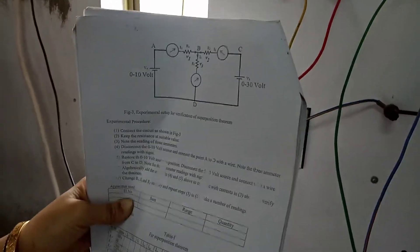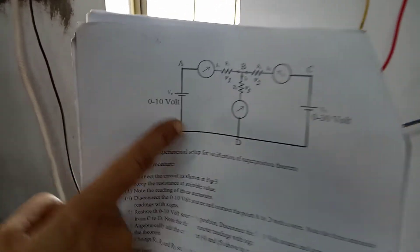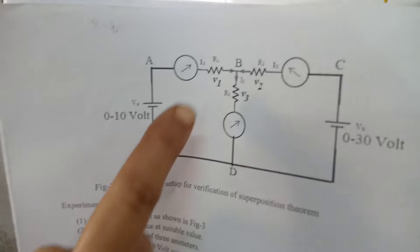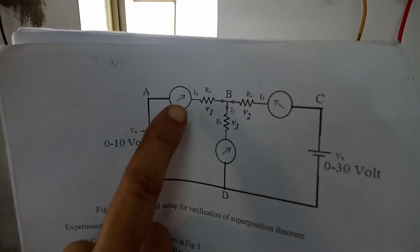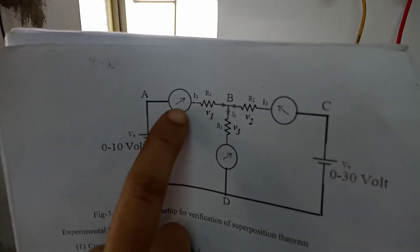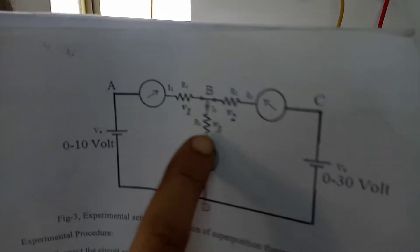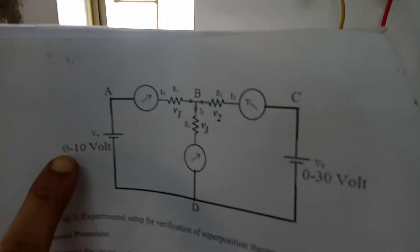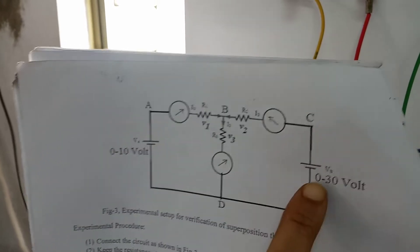Coming to the superposition theorem, we have the circuit as shown in this figure. It has three resistances with three ammeters which are used to measure the current flowing through R1, R2, and R3. There are two sources connected, one source here and another here.